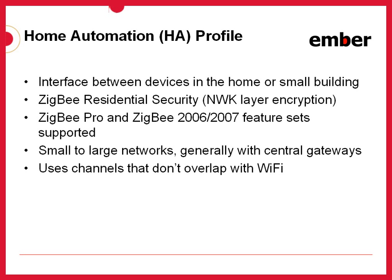The Home Automation Profile is intended to be useful in either small or large networks. It's meant to be fairly scalable, but generally these would be fairly small networks centralized in some sort of gateway or home controller device. To avoid interference with Wi-Fi activity in the home, the profile specifies that only channels in between the Wi-Fi channel allocations in the 2.4 GHz band should be used.